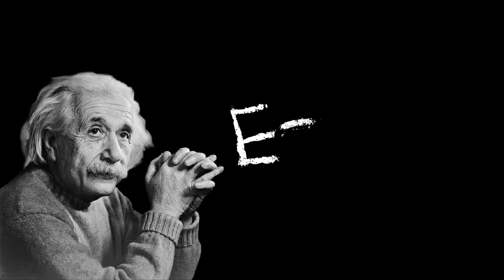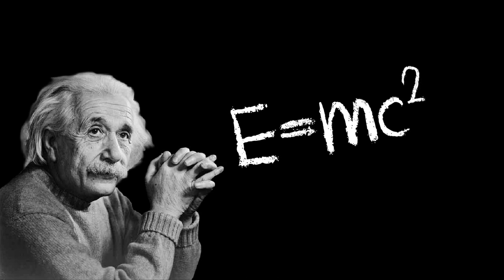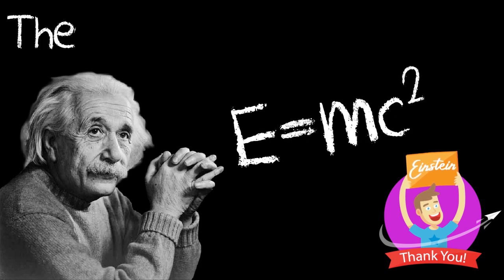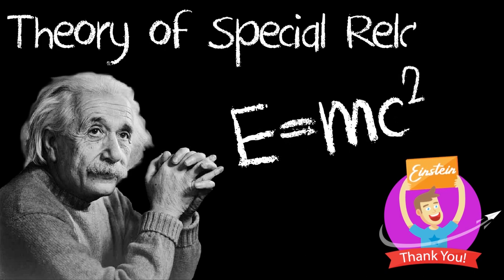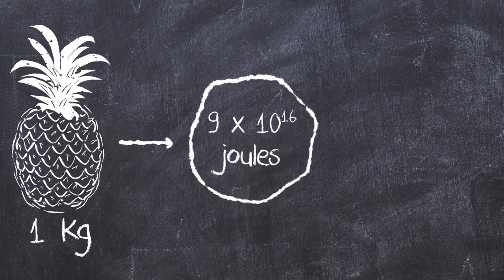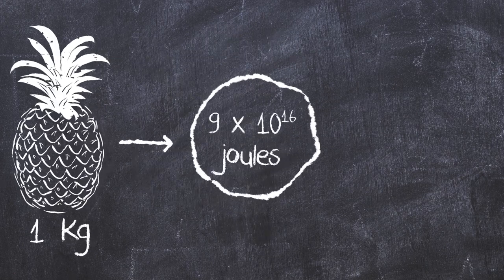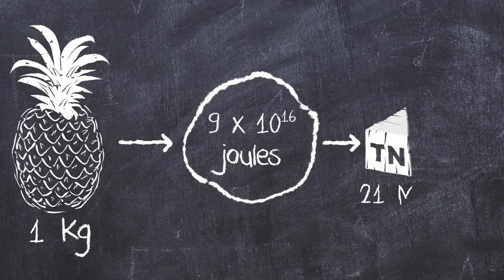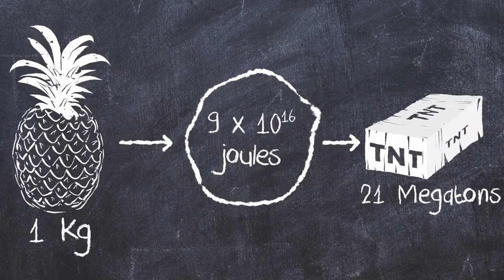That's how Einstein's famous equation is related to our daily life, and that's why we should thank him for explaining the science behind mass and energy, which was the result of the theory of special relativity. Just imagine — if 1 kg of mass can produce a whopping 9 × 10¹⁶ joules of energy, which is equivalent to 21 megatons of TNT, then think how much energy is there inside each of us.